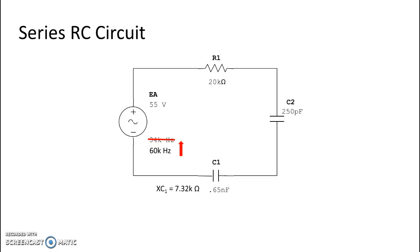So our capacitive reactants changes for our capacitor 1 from 7.32k to 4.08k. And our capacitive reactants for C2 changes from our original value of 18.73k to 10.62k ohms.